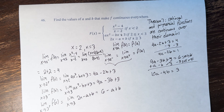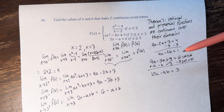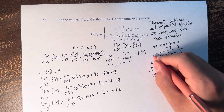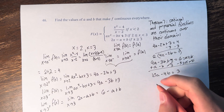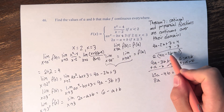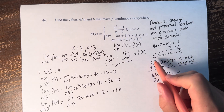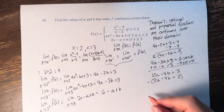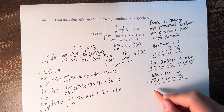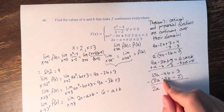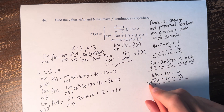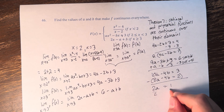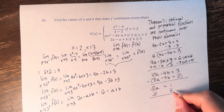Now we have two variables and two equations, so we can solve. We multiply the first equation by 2: 8a minus 4b equals 2. Subtracting this from 10a minus 4b equals 3, the 4b terms cancel, giving 2a equals 1, so a equals 1 half.